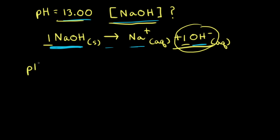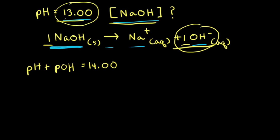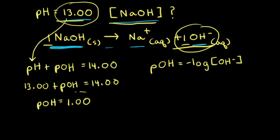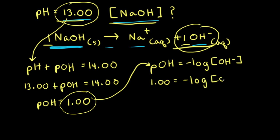At 25 degrees Celsius, the pH plus the pOH is equal to 14.00. So we can plug the pH into our equation, which gives us 13.00 plus the pOH is equal to 14.00. So the pOH of the solution is equal to 1.00. And the pOH is equal to the negative log of the concentration of hydroxide ions. Plugging in the pOH gives us 1.00 is equal to the negative log of the concentration of hydroxide ions.